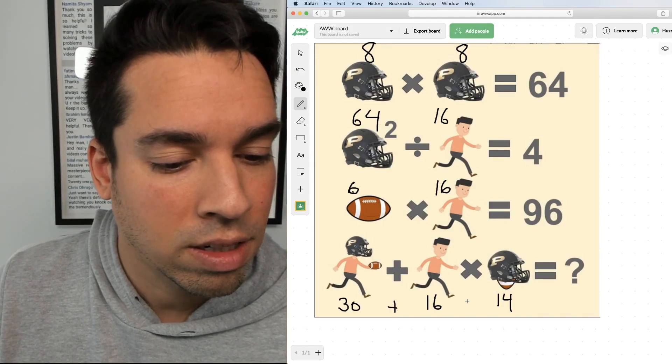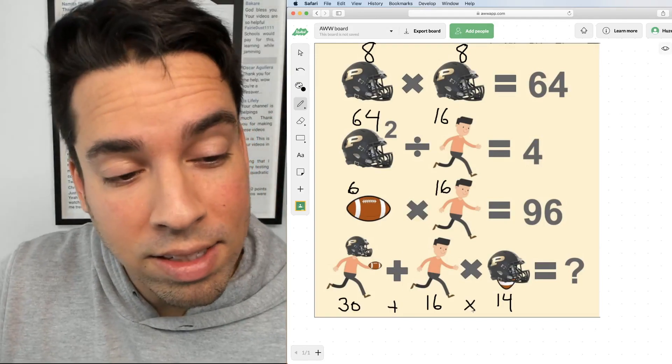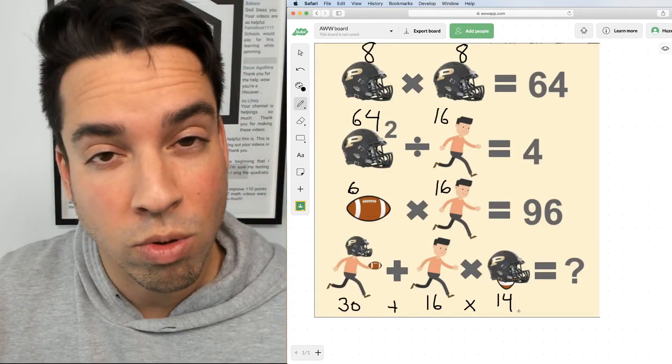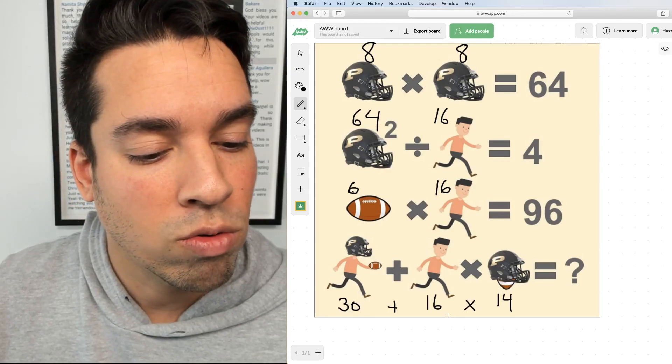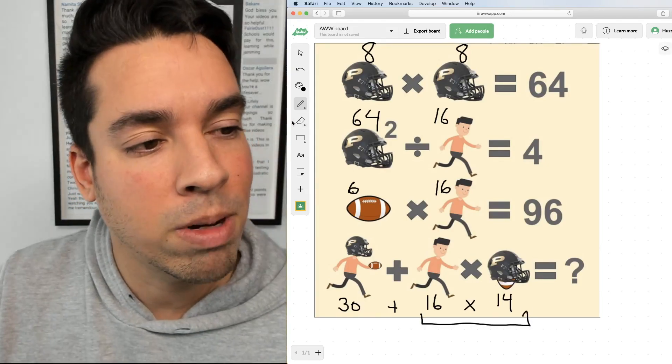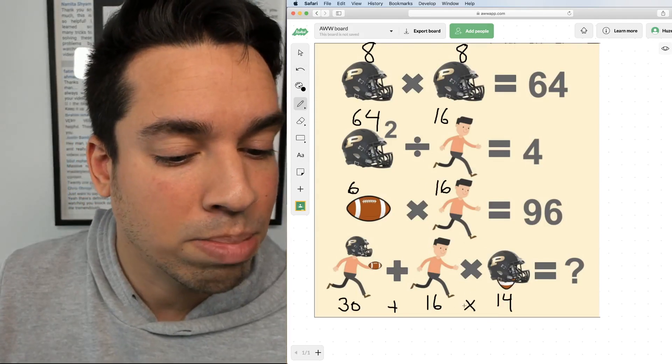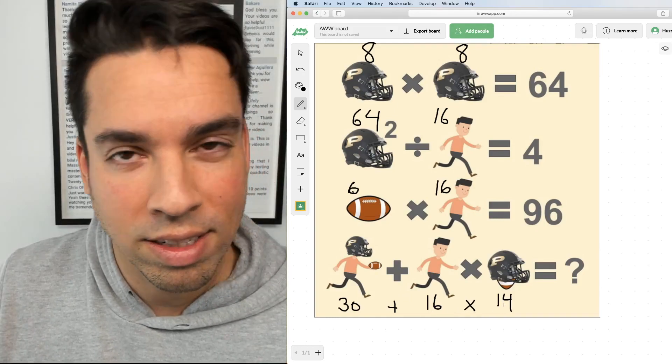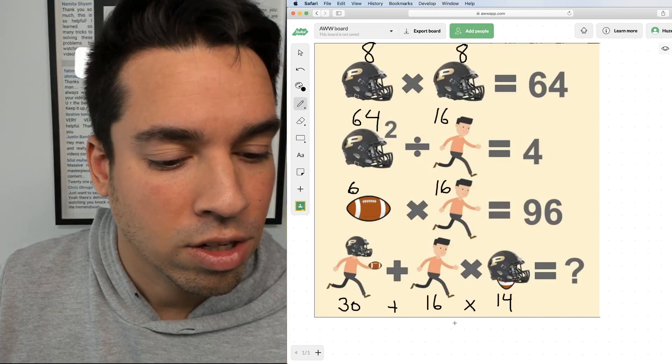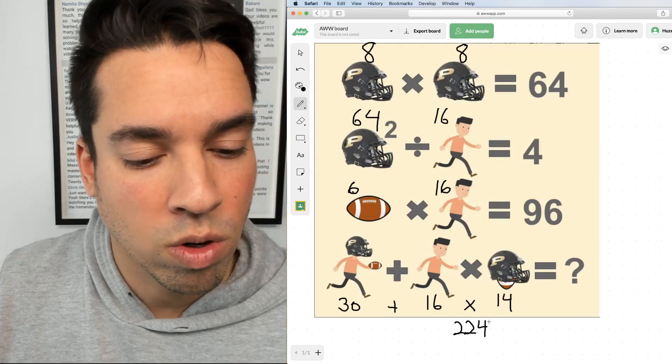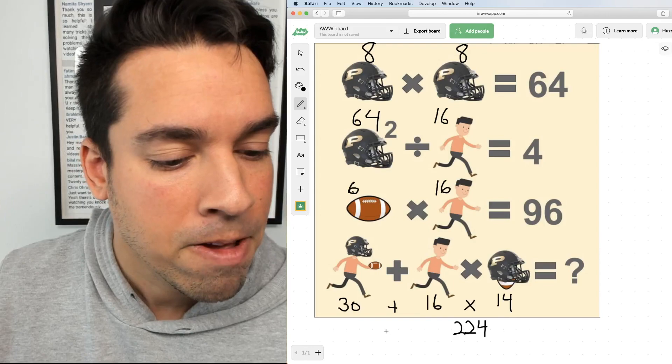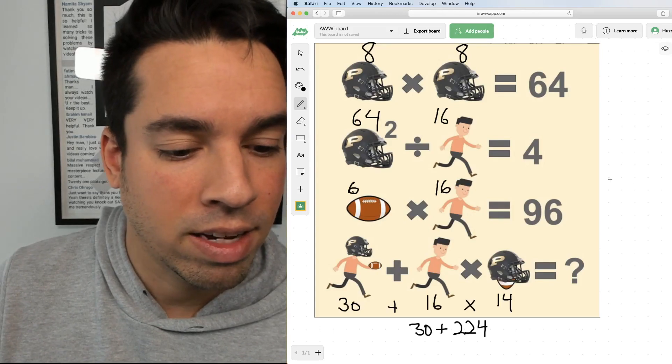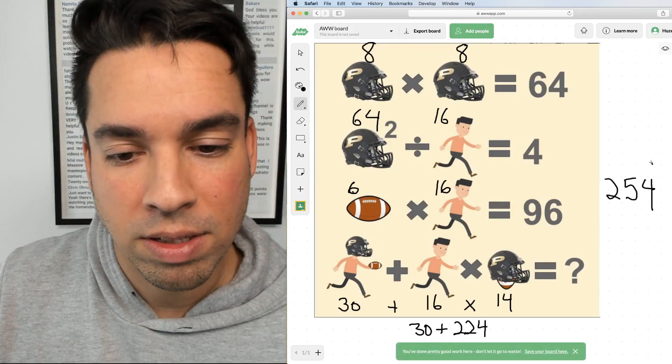Then we've got 30 plus 16 times 14. The last thing you want to be careful of is you don't want to just go from left to right. You don't want to say 30 plus 16 is 46 times 14. We don't do that. We want to remember the order of operations says that multiplication must happen before addition. So we got to complete this multiplication problem, then we add the 30. So what is 16 times 14? That gives us 224, one shy of 225. And then we add that 30 at the end, and 30 plus that gives me a nice 254.